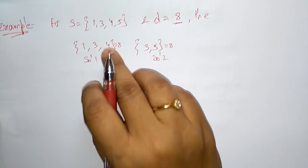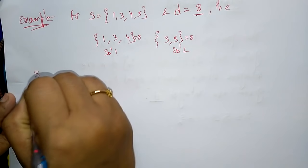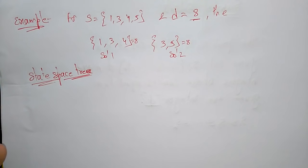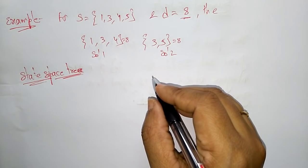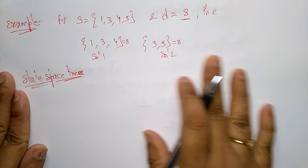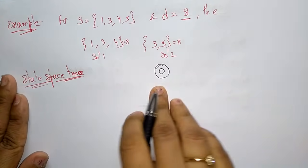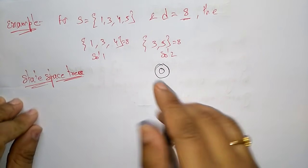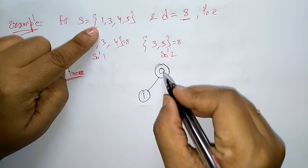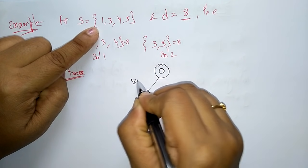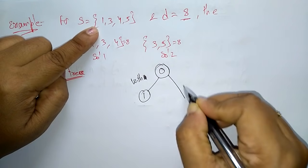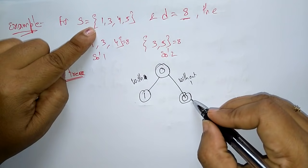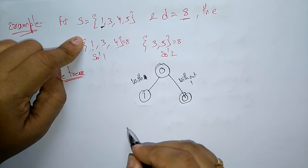Let me explain this problem using a state space tree. Before starting, no elements are inserted, so the root starts with zero. The first element to be inserted is 1. The subsets of zero are: with 1 (right side, add one to get 1) and without 1 (left side, just copy zero).